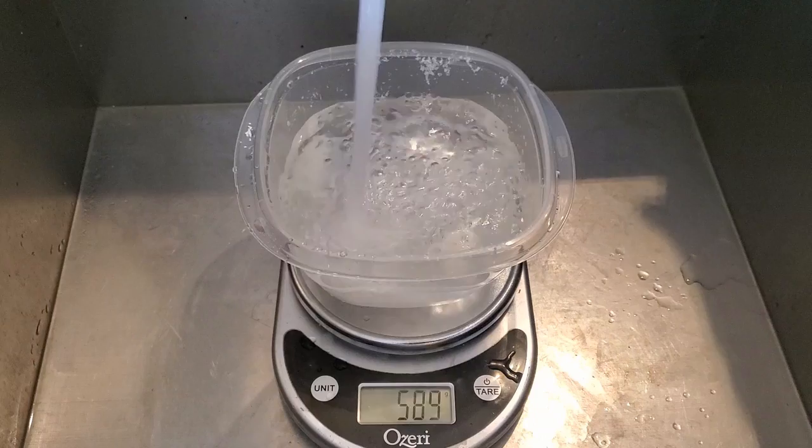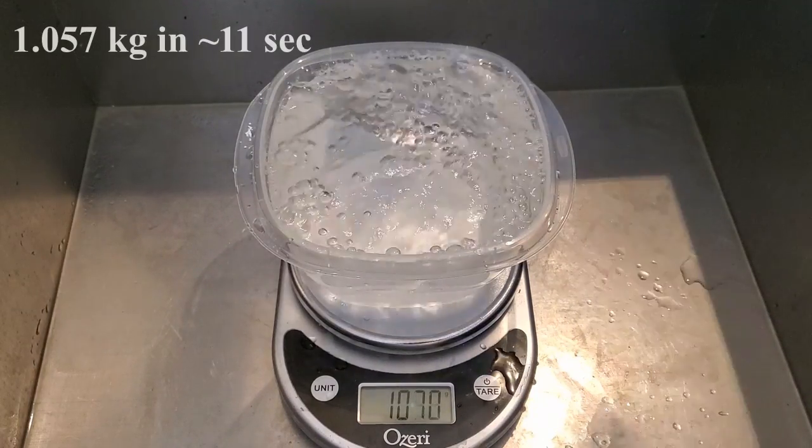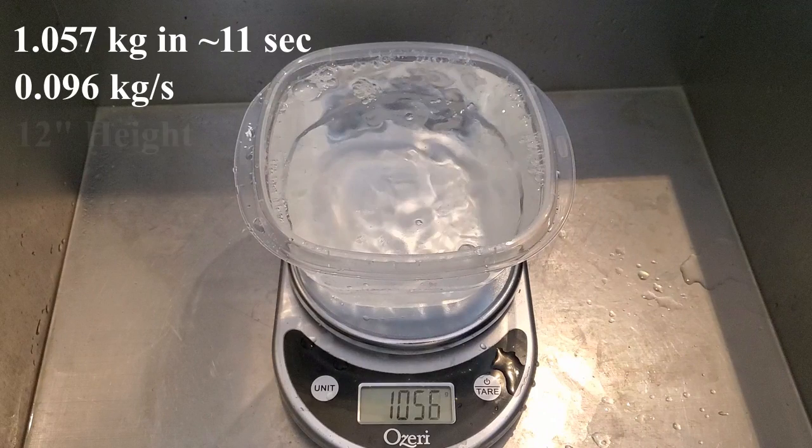I measured the water flow from my sink faucet by timing how long it took to fill a certain weight. Knowing the height of the faucet and the mass flow rate of the water, I was able to determine that there was 286 milliwatts of power in the water flow.